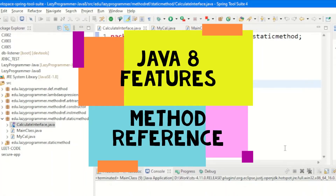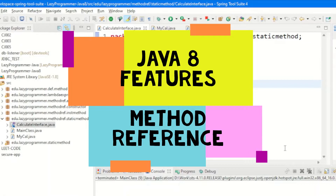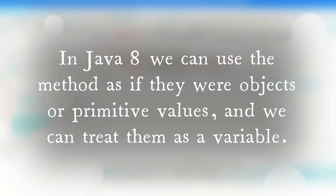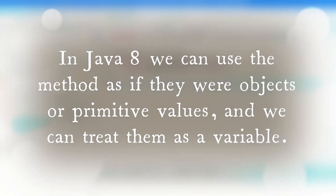Welcome to another video on Java 8 features. In this video we will cover method reference, which was introduced in Java 8, with examples. As we all know, a method is a collection of statements that perform some specific tasks and return the result to the caller. A method can also perform tasks without returning anything. Methods allow us to reuse code without retyping it again and again. In Java 8 we can use methods as values.